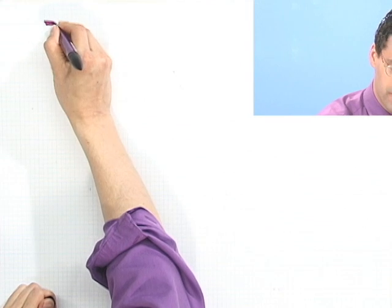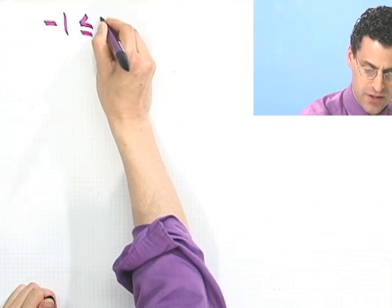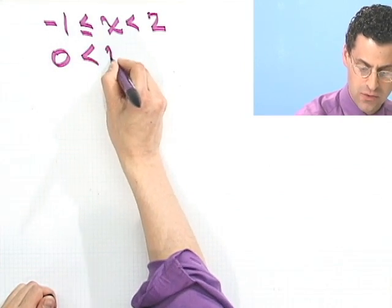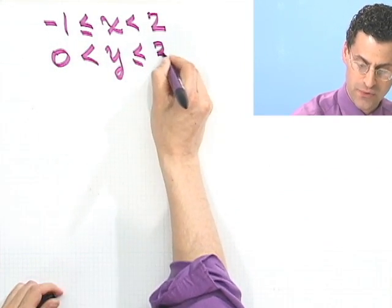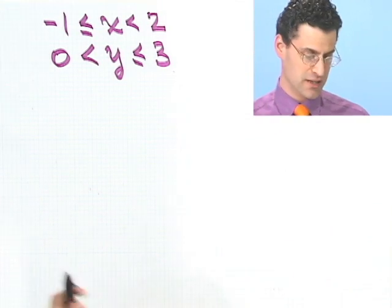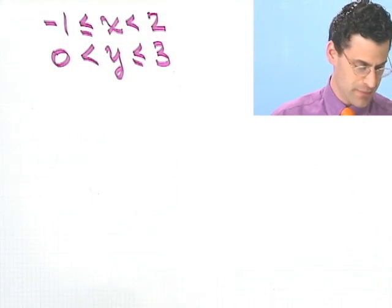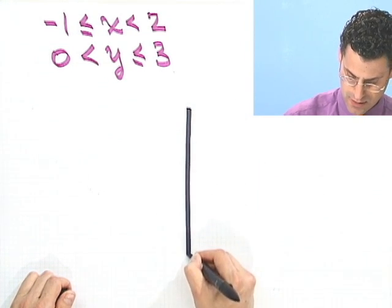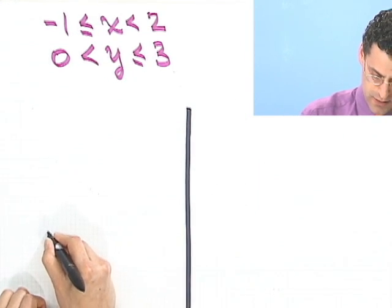Let's take a look at graphing and take that a step further — let's start seeing the graphs of solutions to systems of inequalities. Let's try one right off the bat. We want to solve: negative one less than or equal to x less than two, and at the same time zero less than y less than or equal to three, and see what the solution set looks like. The first step is to draw some axes.